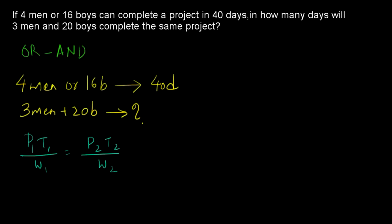Here W1 and W2 are not given, so we simplify to P1×T1 = P2×T2. It is given that 4 men or 16 boys complete the work in 40 days. We can write P1 either in men or in boys, but the units of P1 and P2 must be the same. If P1 is in boys, P2 must also be in boys.